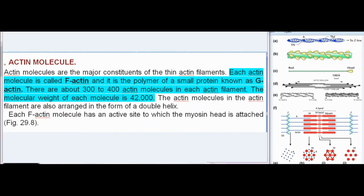Actin Molecule: Actin molecules are the major constituents of the thin actin filaments. Each actin molecule is called F-actin and it is the polymer of a small protein known as G-actin. There are about 300 to 400 actin molecules in each actin filament. The molecular weight of each molecule is 42,000. The actin molecules in the actin filament are also arranged in the form of a double helix. Each F-actin molecule has an active site to which the myosin head is attached.